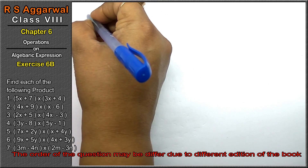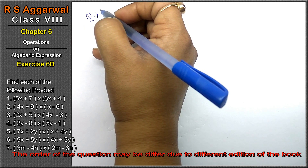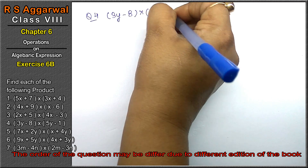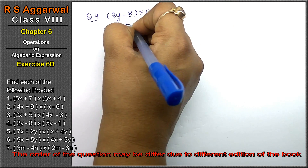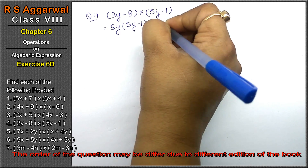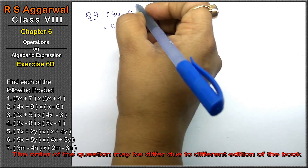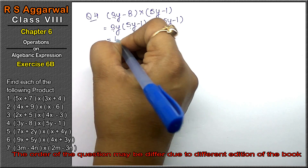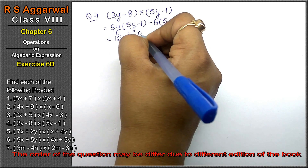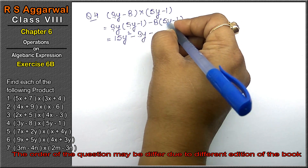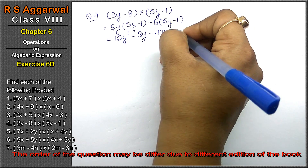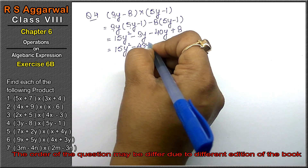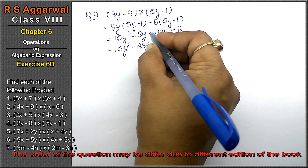Let's do question number four of Exercise 6B, that is algebraic expressions. Question number four is (3y - 8) multiplied by (5y - 1). So: 3y multiplied by (5y - 1), minus 8 multiplied by (5y - 1). Plus plus: 5 times 3 is 15y squared. Plus minus: 3y. Minus minus: 8 times 5 is 40y, minus minus gives plus 8. So we get 15y squared minus 43y plus 8. Minus 43y because both negative signs add since their variables are the same.